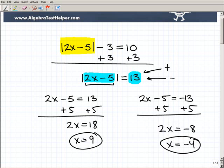So those are my two solutions, x equals 9 and x equals negative 4. Remember, there's always two solutions when you're talking about an absolute value equation. All right, just a real quick example.